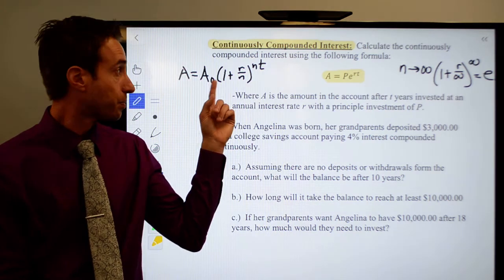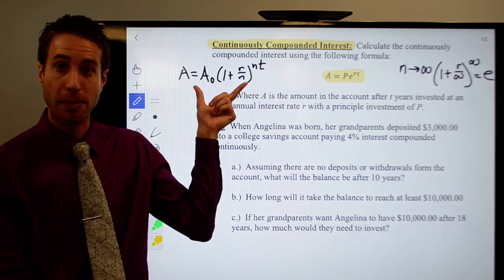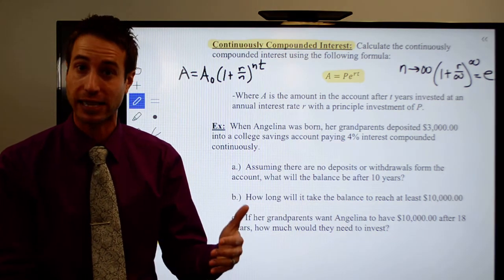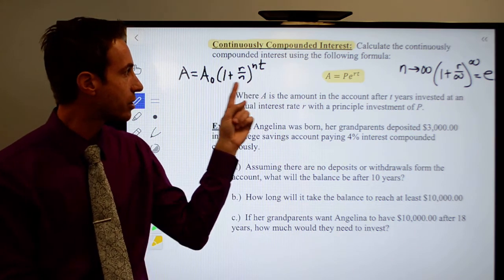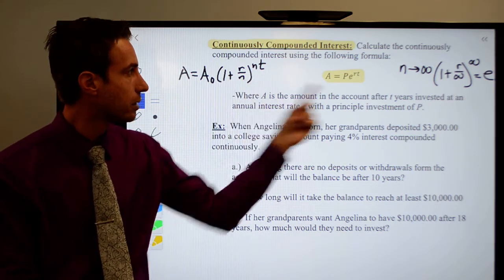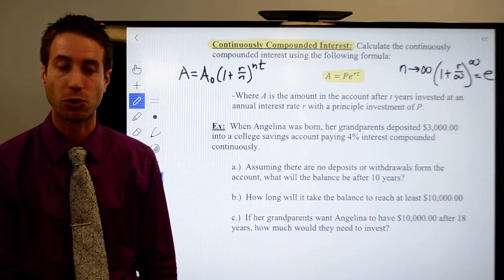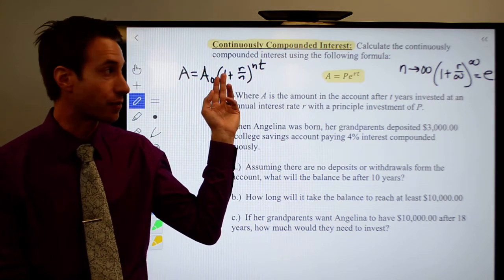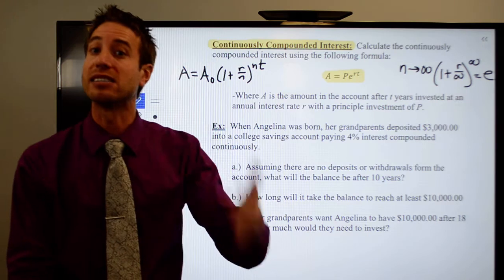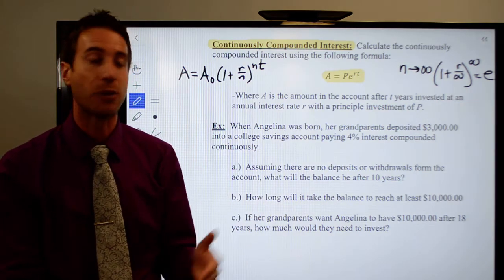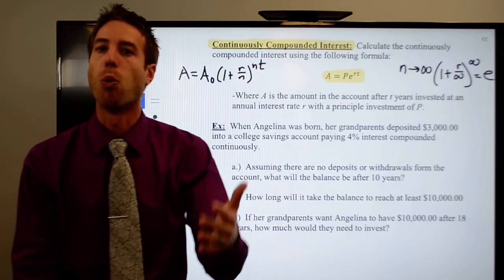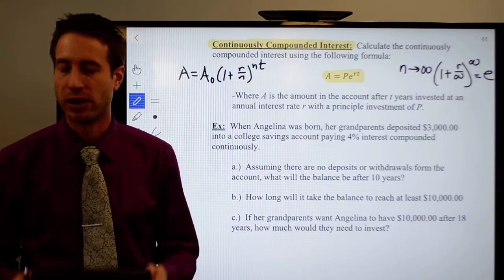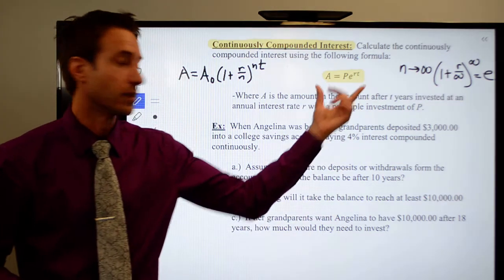So this is our compounding interest formula — the only difference is that because of E, the interest is being continuously compounded. We replace all the compounding terms with E, the natural base. This is why the natural base deserves its own section in chapter 7 — it shows up in a lot of important places, and the continuously compounding interest formula is one of them.